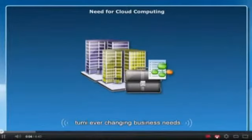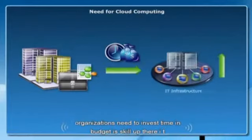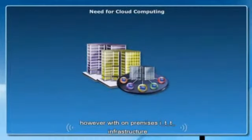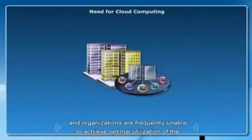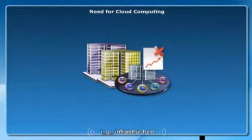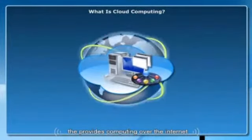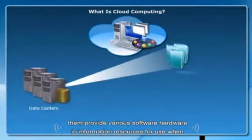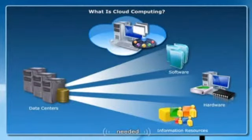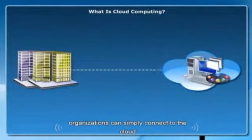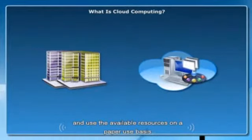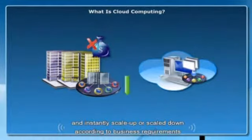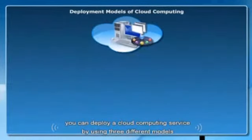To meet ever-changing business needs, organizations need to invest time and budget to scale up their IT infrastructure, such as hardware, software, and services. However, with on-premises IT infrastructure, the scaling process can be slow, and organizations frequently are unable to achieve optimal utilization. Cloud computing is a paradigm shift that provides computing over the internet. A cloud computing service consists of highly optimized virtual data centers that provide various software, hardware, and information resources for use when needed. Organizations can simply connect to the cloud and use the available resources on a pay-per-use basis, helping companies avoid capital expenditure and instantly scale up or down according to business requirements.